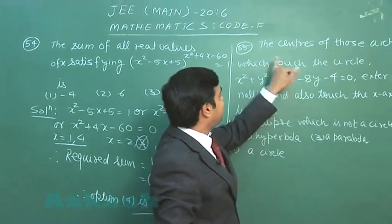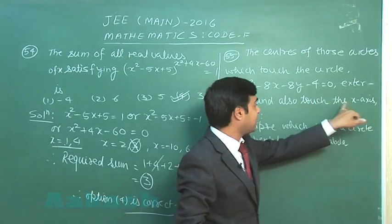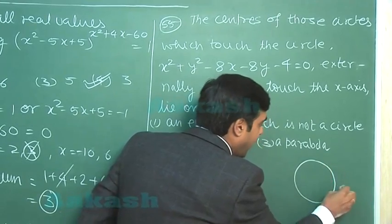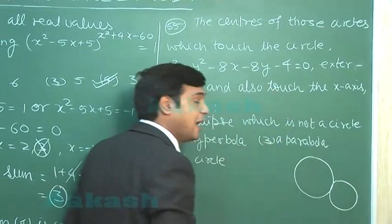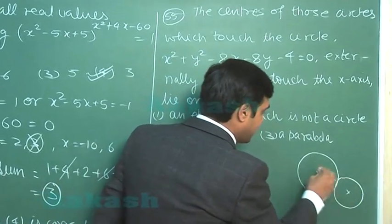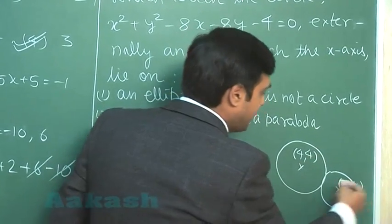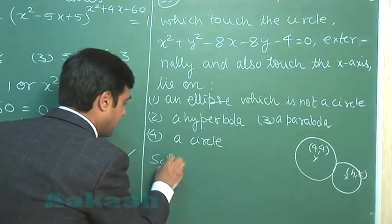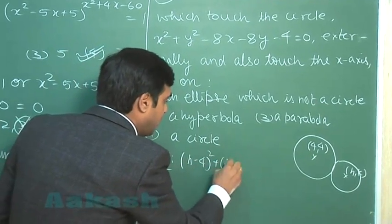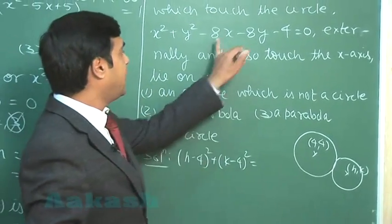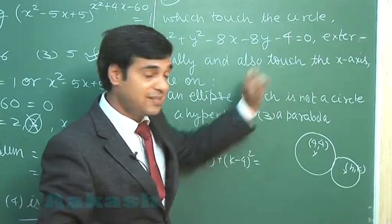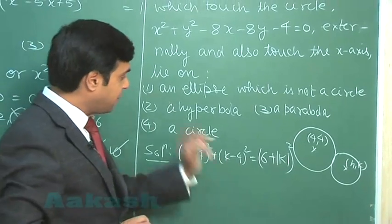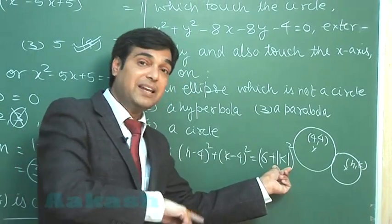The centers of those circles which touch the circle, the given one, externally and also touch the x-axis lie on. So clearly the question is talking about there is one given circle, another circle touching it externally and also the x-axis. The center of the given circle is known to me: 4 comma 4. And let us say for the required one it is h comma k. So applying the result that the distance between the centers equals sum of radii, it is giving me h minus 4 whole squared plus k minus 4 whole squared equals the radius of the first circle, this is 16 plus 16 plus 4, that is root 36, giving me 6, and for the second one it is mod k because it is touching the x-axis.